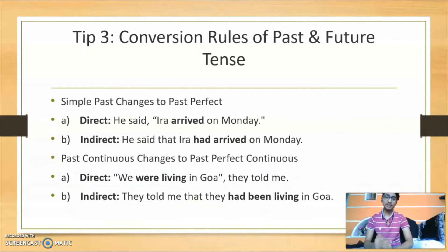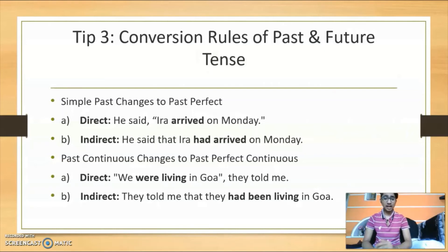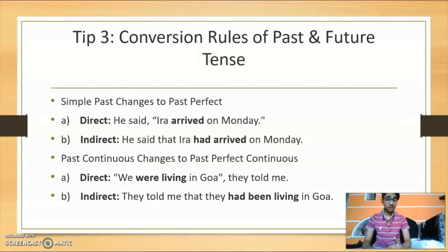Moving on to tip three: conversion rules for past and future tense. Simple past changes to past perfect. For example, 'He said, Era arrived on Monday' converts to 'He said that Era had arrived on Monday.' Then past continuous changes to past perfect continuous. In direct speech: 'We were living in Goa,' they told me, becomes 'They told me that they had been living in Goa.'